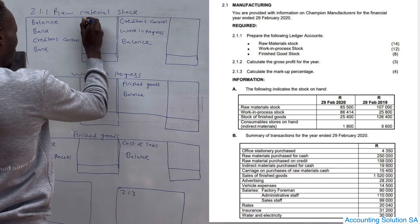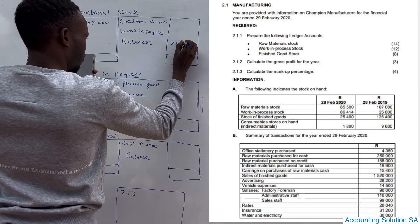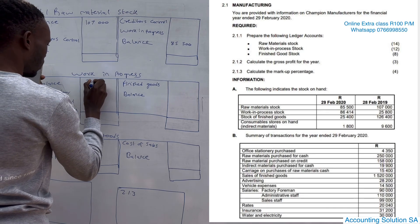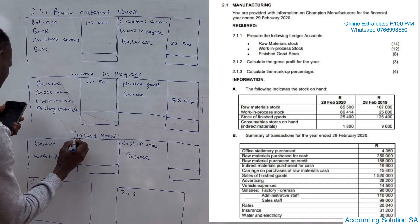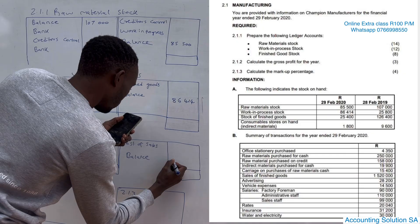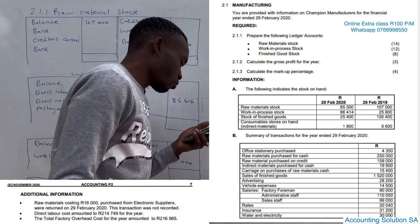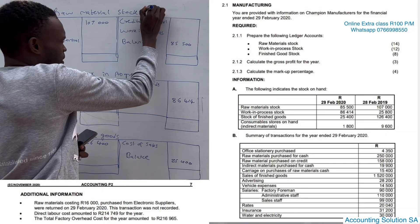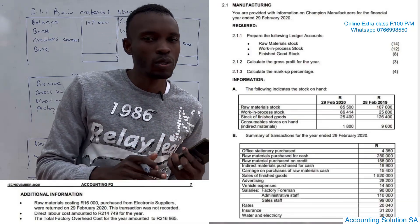Raw material: opening balance in 2019 was 107,000 and closing was 85,500. Work in progress: opening balance was 25,800 and closing balance was 86,414. Finished goods: opening balance was 126,400 and closing balance was 45,400. The other one we have is consumable store on hand - this is indirect material. Indirect material is not the same as raw material; raw material is the same as direct material, so don't mix up these two. Indirect material falls under factory overhead costs.